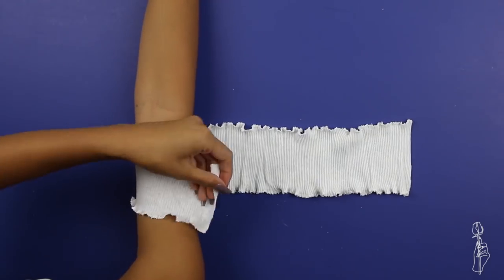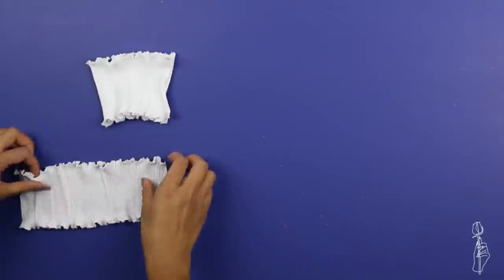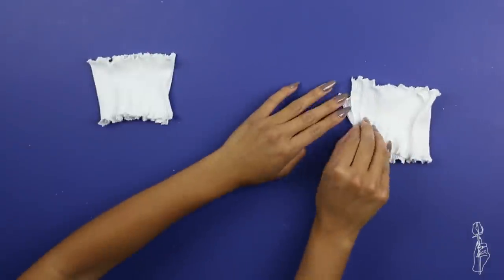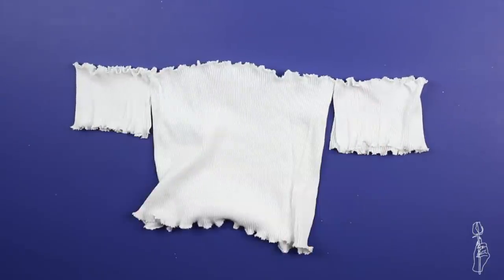Once you finish the top and bottom, wrap the sleeve around your arm to measure out the width of your sleeve and cut two pieces. Fold each piece in half. Sew a straight stitch down the side to finish off the sleeve. Connect the sleeves to the body with a small stitch and you are finished.